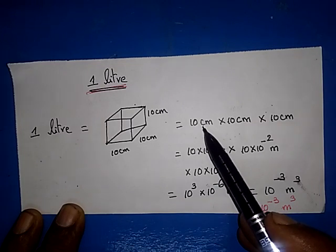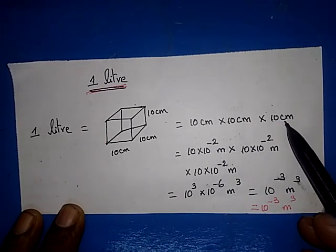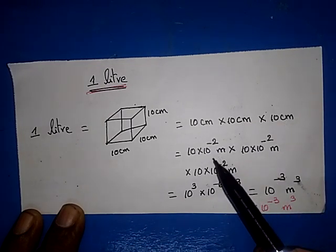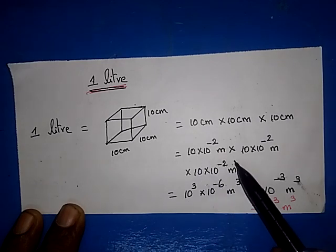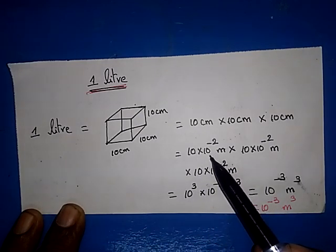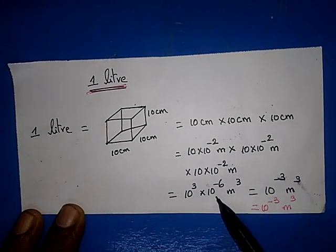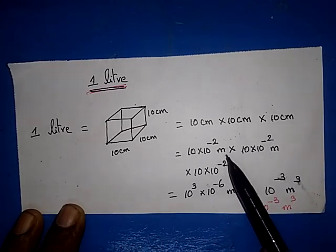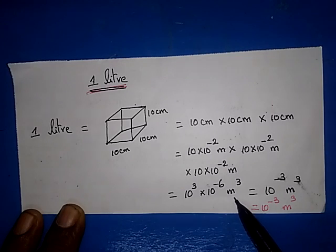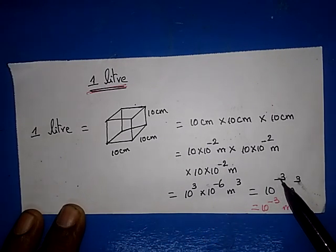Centi is 10 power minus 2, here also 10 power minus 2, and here also 10 power minus 2. 10 into 10 into 10 is 10 power 3. 10 power minus 2 into 10 power minus 2 into 10 power minus 2 is 10 power minus 6. Metre into metre into metre is metre cube. So 10 power 3 into 10 power minus 6 is 10 power minus 3 metre cube.